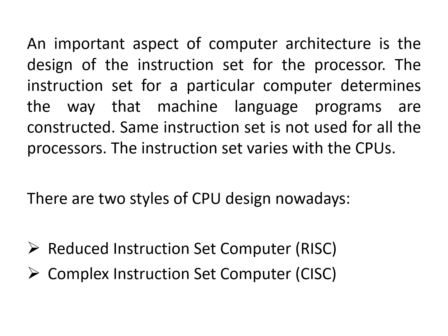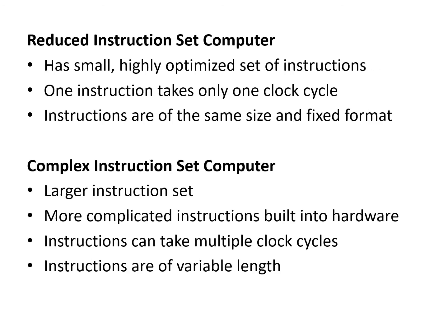An important aspect of computer architecture is the design of the instruction set for the processor. The instruction set for a particular computer determines the way machine language programs are constructed. The same instruction set is not used for all processors — the instruction set varies with the CPU. There are two styles of CPU design nowadays: reduced instruction set computer (RISC) and complex instruction set computer (CISC).